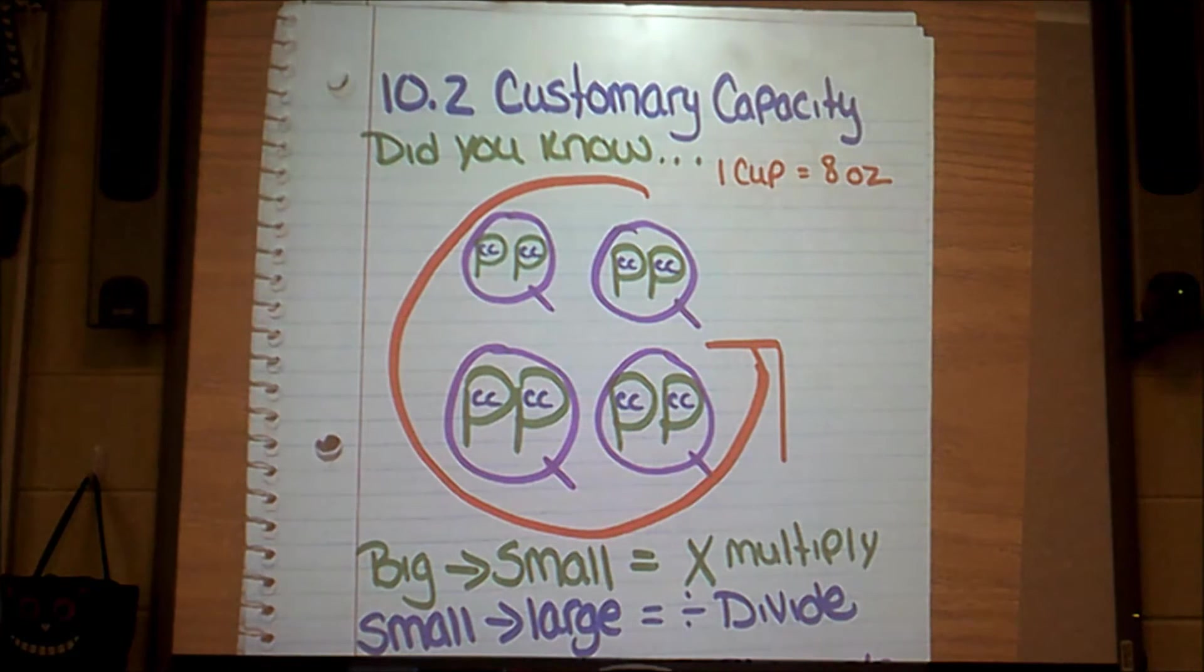Hi guys! We are on section 10.2, which is looking at customary capacity. This is volume, liquid. You know, we would measure these with our soda or coffee or water, types of liquid that we're going to be looking at capacity, how much capacity they hold.